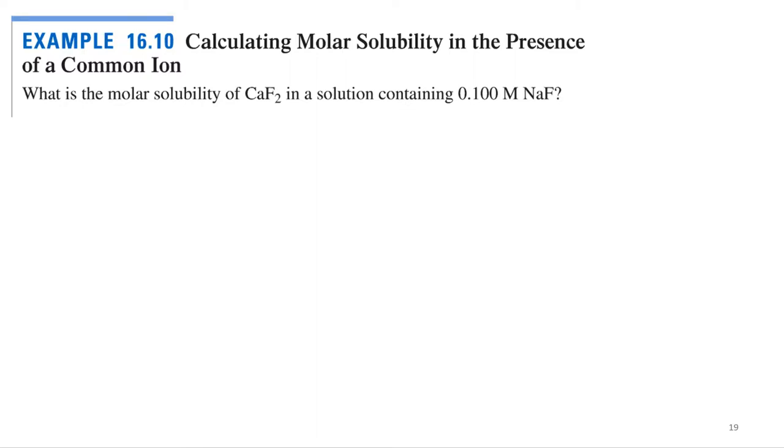Alright, so one thing we're going to need for this is the Ksp. So we would be given the Ksp for this, and it means I've got to look up the Ksp because it's not here. Can it be done without the Ksp? No, because we're going to need to set up an ice table. Alright, I'm getting 3.9 times 10 to the negative 11th.